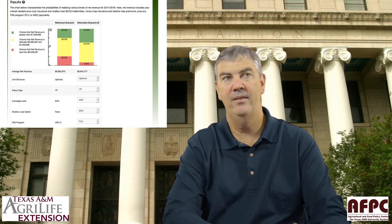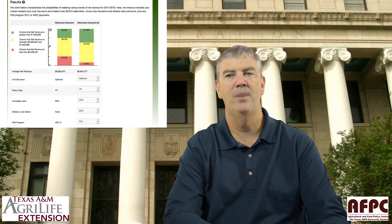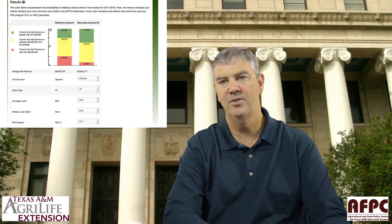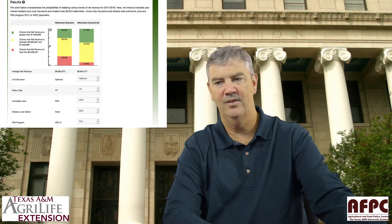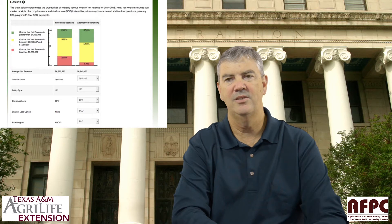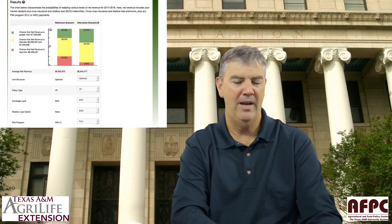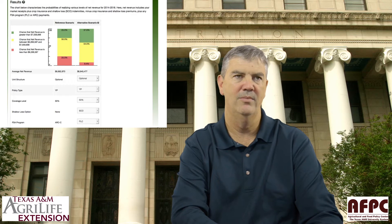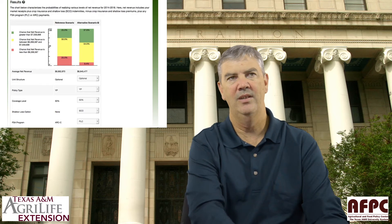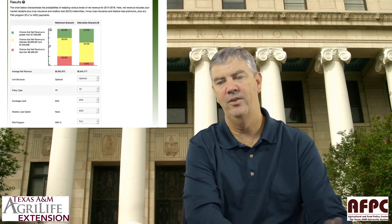You can see right away that the amount of downside risk on net revenue has been decreased substantially by just the policy choice. What I want you to do is go in and look at what if you change from optional unit — where you're insuring each field individually and they pay on individual losses — and click the box to change it to enterprise, and see what it does to your results. The question is: with the protection from FSA title one programs you're getting, some of it might be duplicate of what you're getting from crop insurance and some won't, so you can adjust all the different parameters of your crop insurance to see whether you can make yourself better off.